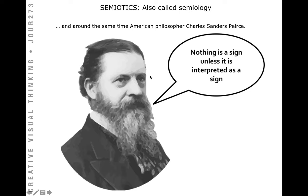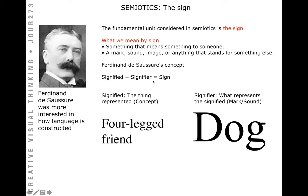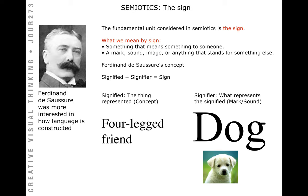Continuing on, Ferdinand de Saussure was more interested in how language is constructed. His formula was: signified plus signifier equals the sign. The signified represents the concept itself — for example, a four-legged friend. The signifier is what represents that signified, which could be the word 'dog,' a picture of a dog, the sound of a dog, and that sort of thing.